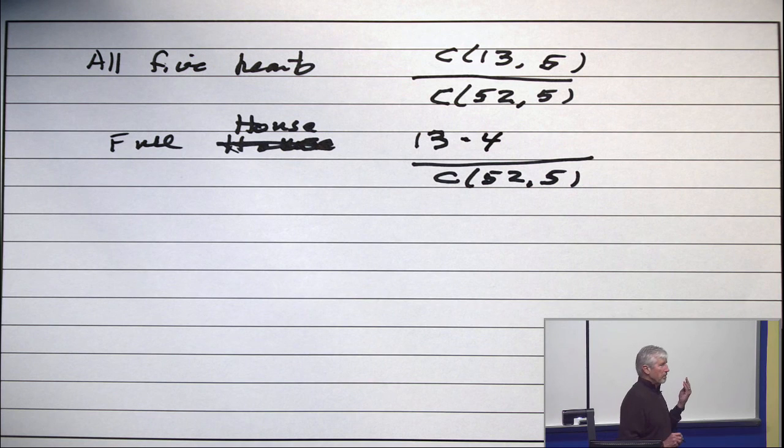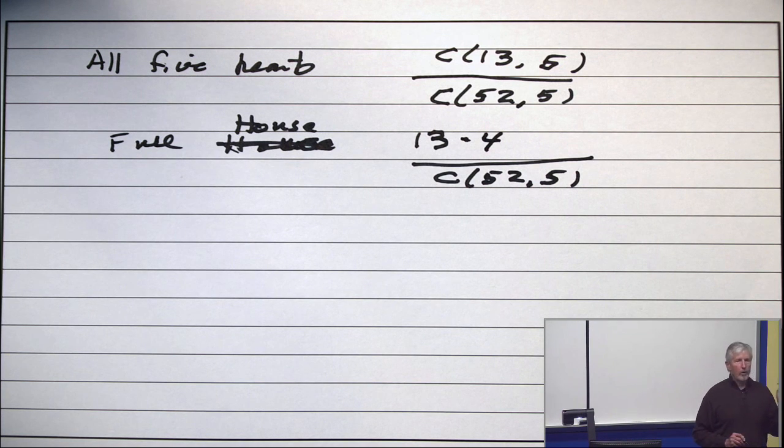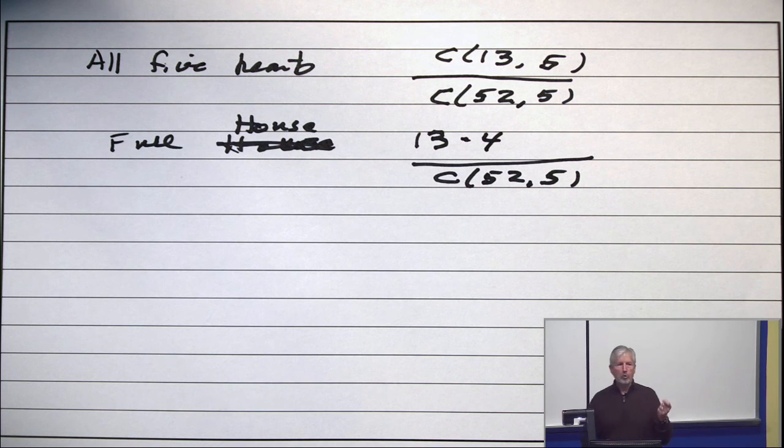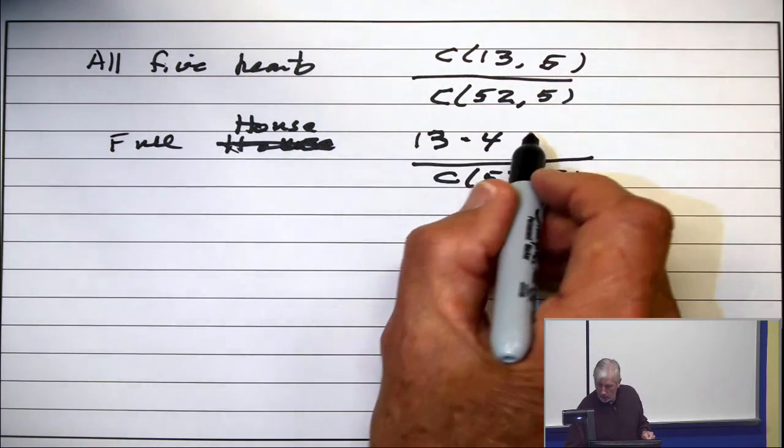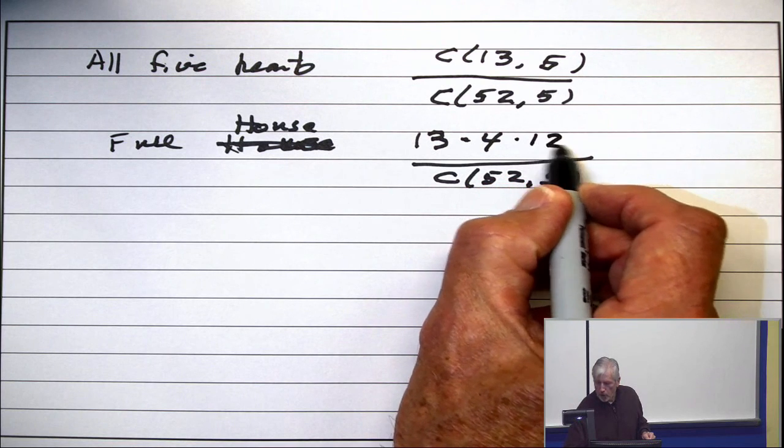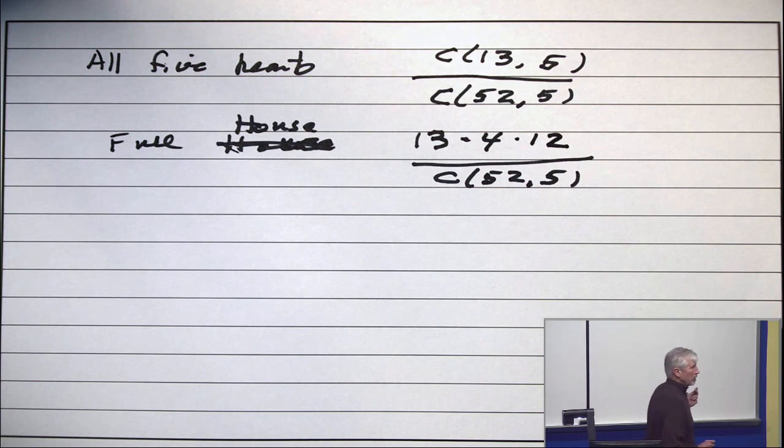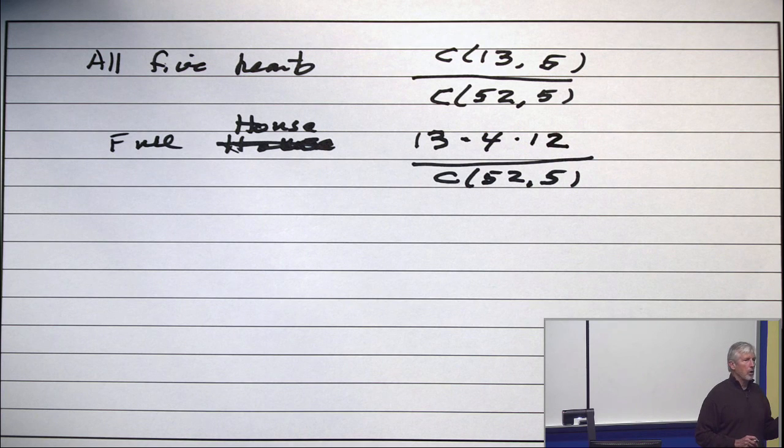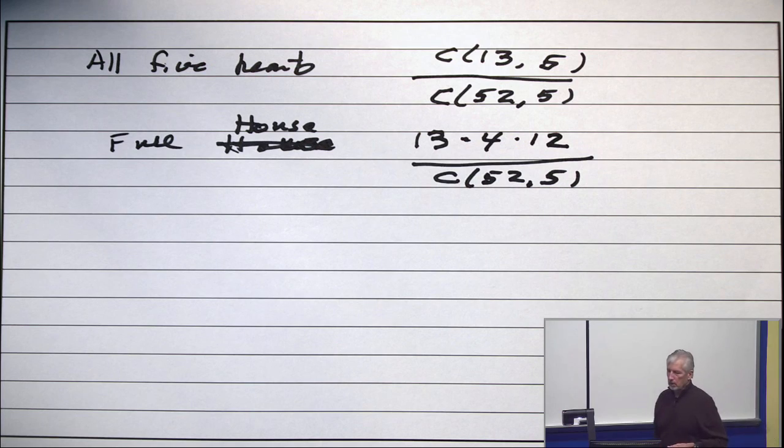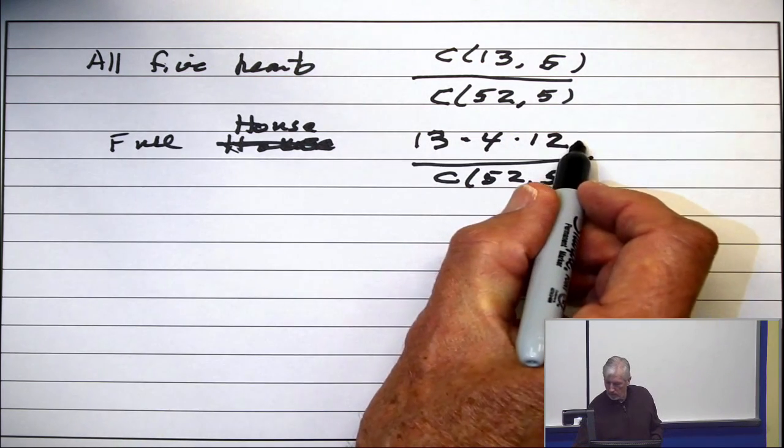Okay. Now I have the 3. I've got to get 2 from another kind. First, choose the kind. How many ways to choose the kind? Twelve. Not 13. Because it can't be the same as the first kind. So, 12 ways to choose the other kind. Now I need 2 cards. How many ways to get those 2 cards? 4 choose 2, or C(4, 2). And what numerically is that? Six.